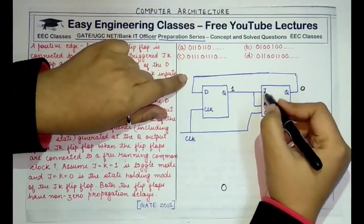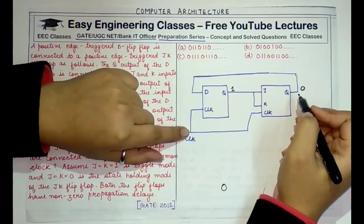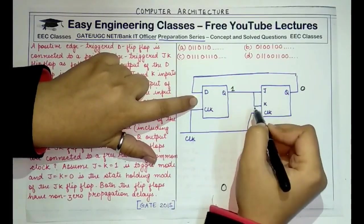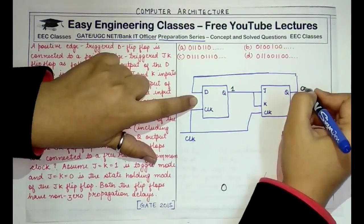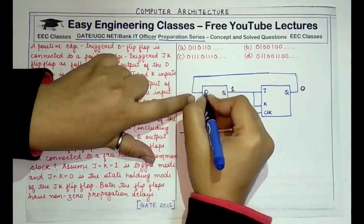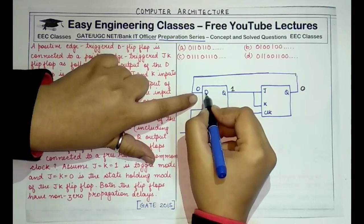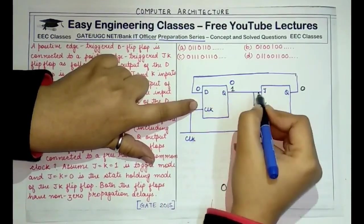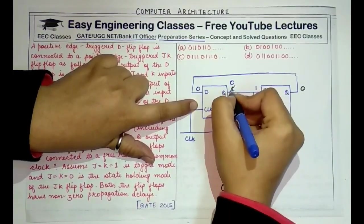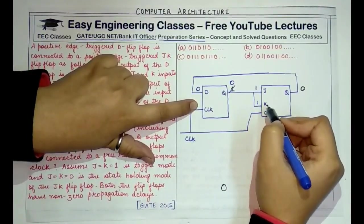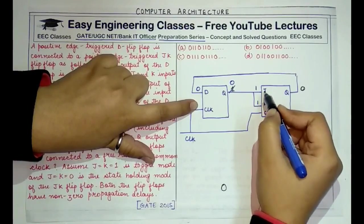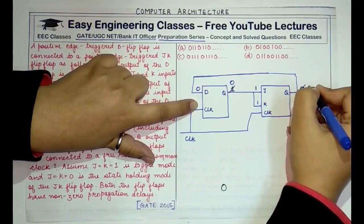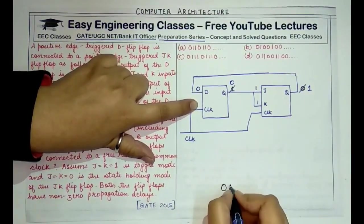Initially the JK output is 0. In the next clock cycle, this 0 propagates to the D input and the 1 propagates to J and K inputs. Since D is a delay flip-flop, the input is reflected at the output. The previous Q value is transmitted to J and K inputs. Since J=K=1 is the toggle state, it results in toggling of the previous state. The previous state was 0, so the new output is 1.